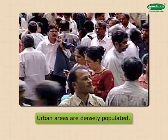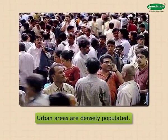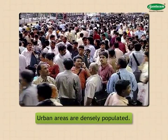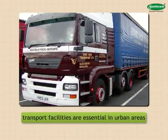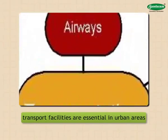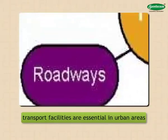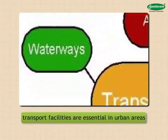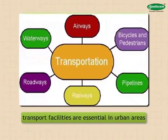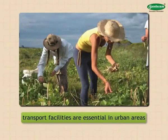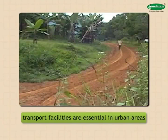In cities, there is a distance between the place where people work and their residence; that is why transport facilities are essential in urban areas. Increasing population puts heavy stress on water supply, transport, and other public services. The activities of people in rural areas are normally based on the natural resources available in their close surroundings. The settlements in rural areas are small in size. Human life is different in urban and rural areas.